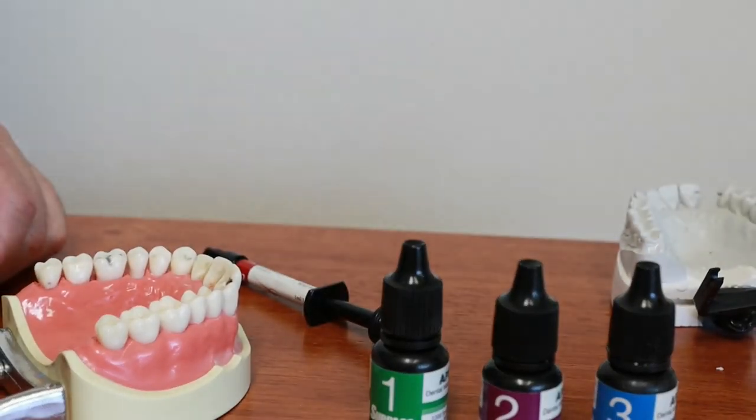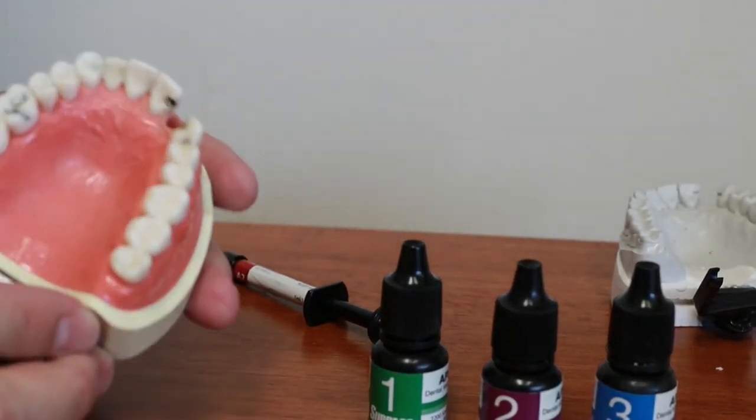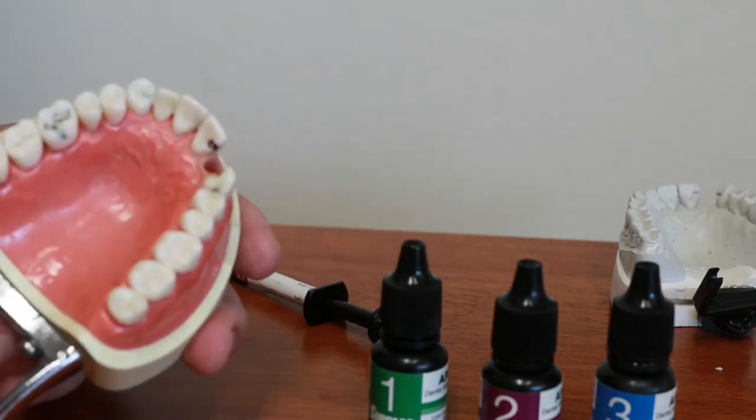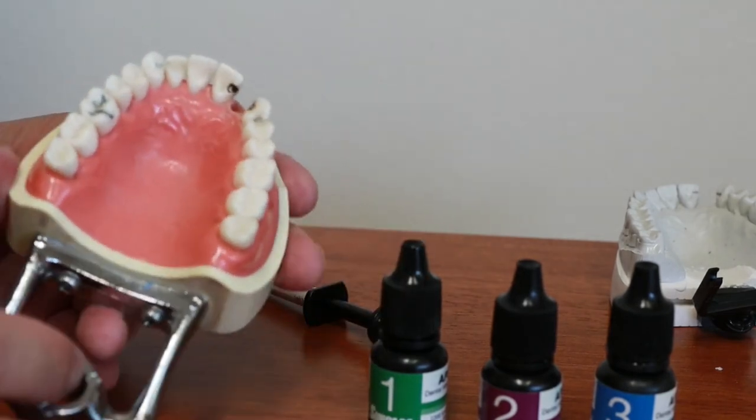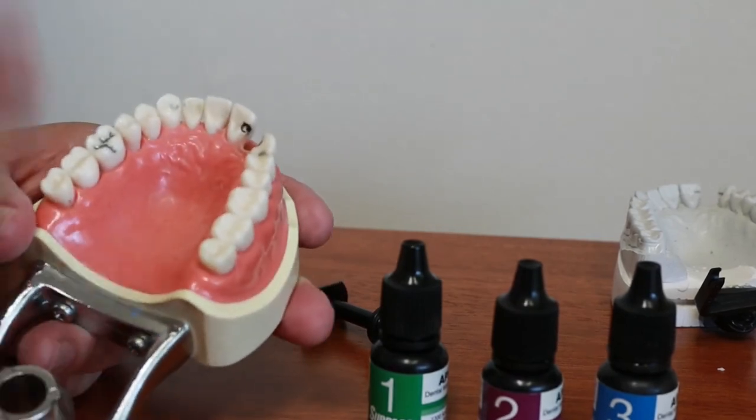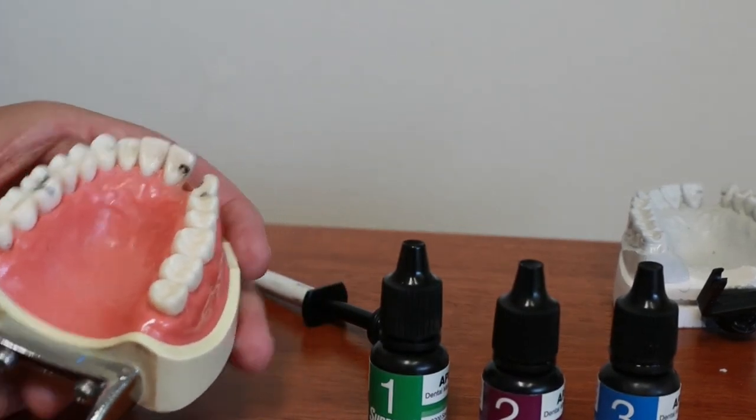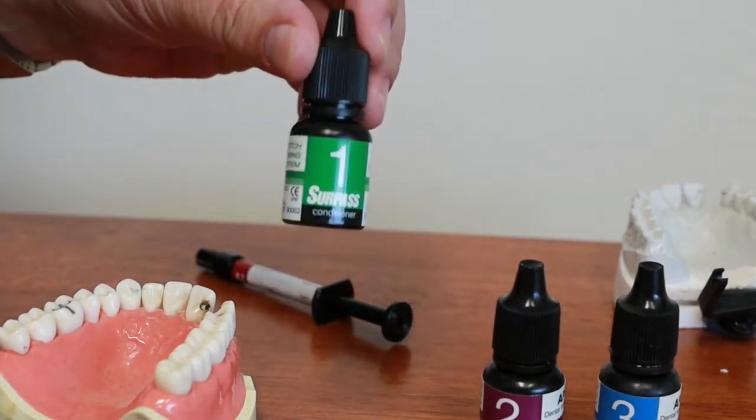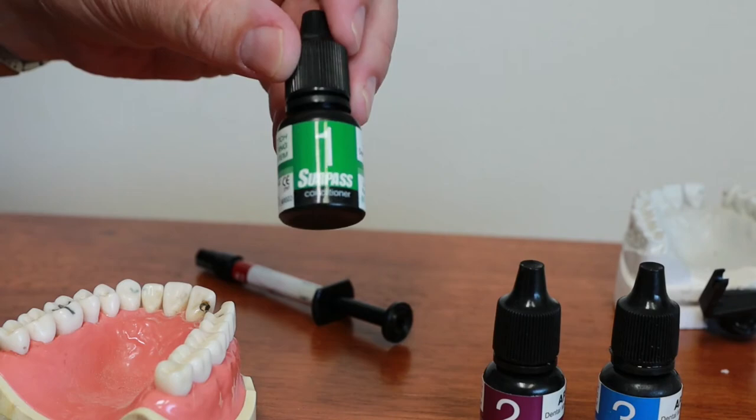Now we're ready to bond the bridge in. On a patient I would isolate it, put some cotton around it, maybe even put a rubber dam around these teeth or isolate, make sure it's nice and dry. And then I apply my bonding agent. I use a bonding agent called Surpass made by Vista Apex. It's a three bottle system.